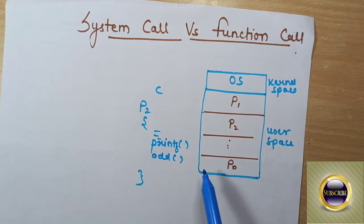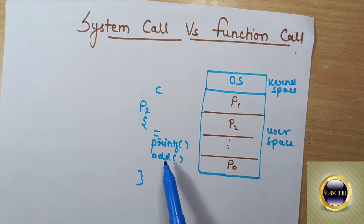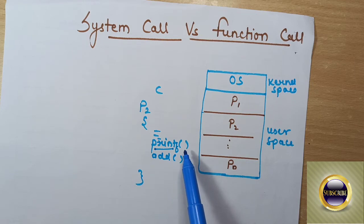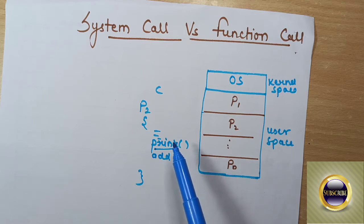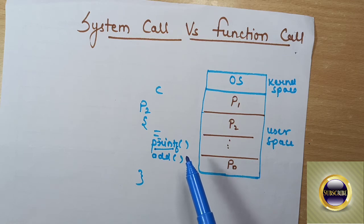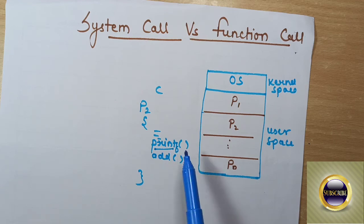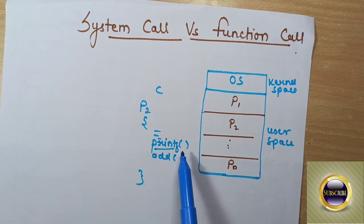When process P2 is loaded, it will start executing instructions one by one. When it calls the printf function, it has to pass some argument within it, and the argument passed by the program will be printed on the monitor. This printf function is defined inside the C library. Once the program calls printf, this is called a function call, and this function is defined inside the C library.